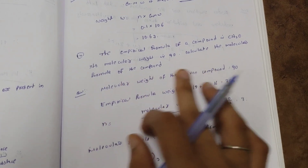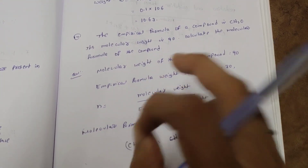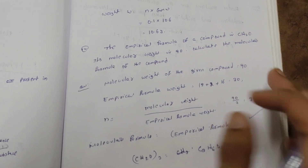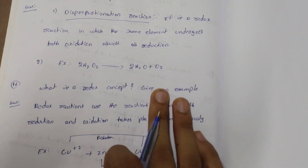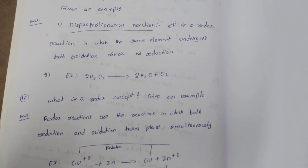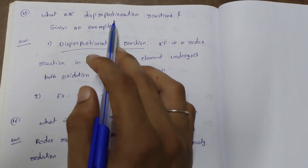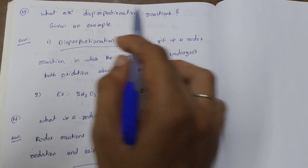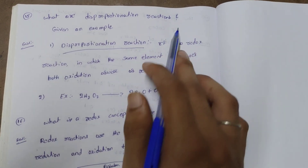The empirical formula problem is also a 2-mark question. Note it in your notebooks and materials. The last important question is: describe disproportionation reactions. This is a very, very important question and answer.